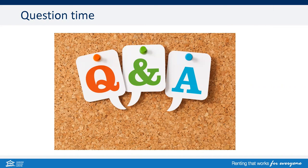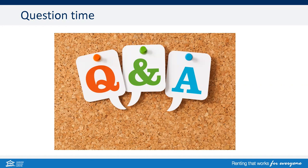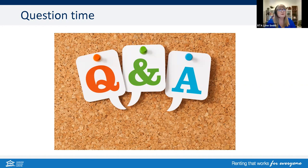Joanne's question: what's the RTA's position if you want access to a property for a maintenance inspection when a routine inspection has already been completed, but the owner wants further investigation — what notice is required? This comes back to the purpose of entry. If it is to carry out a maintenance or repair issue, you're allowed to do that. If you've done a routine inspection but want to go back for more on that inspection, the best and quickest way is to have a conversation with the tenant and gain entry by way of mutual agreement.